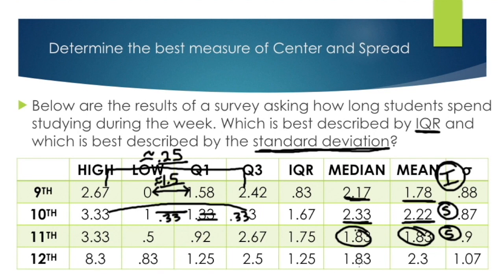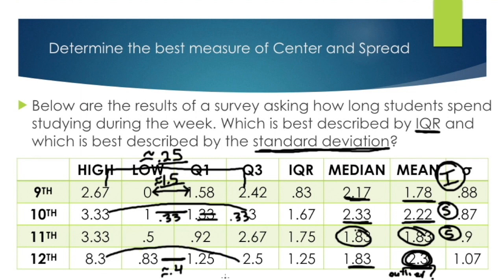For 12th graders, the mean of 2.3 seems too far from the median of 1.3, which usually means there's an outlier on the high end. Checking the whiskers: the low whisker is 1.25 minus 0.83, which is approximately 0.4. But the high whisker is 8.3 minus 2.5, which is almost 6 — they are nowhere near each other. That high value of 8.3 is definitely an outlier throwing off the mean, making IQR the best choice for 12th graders.